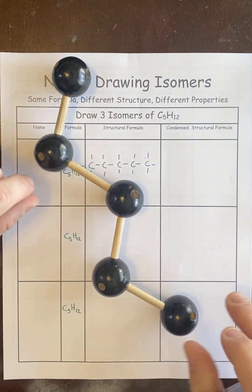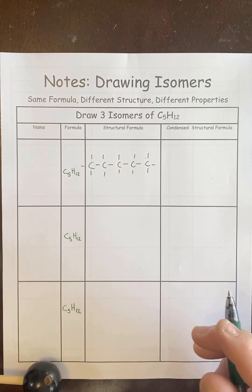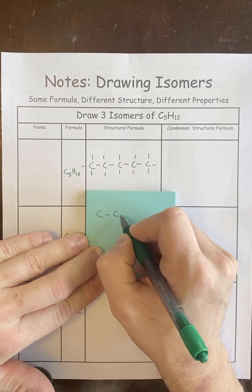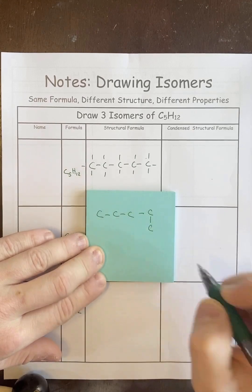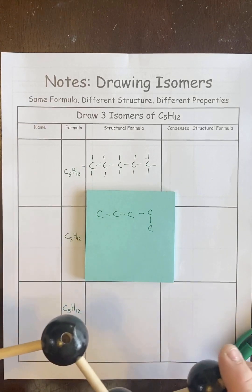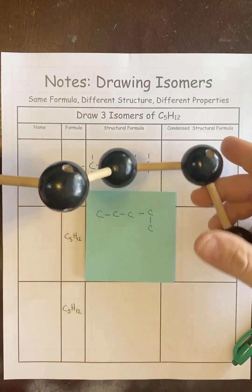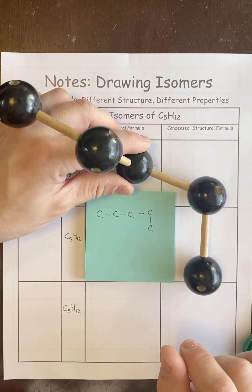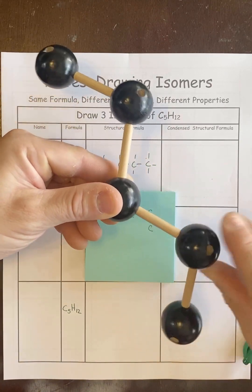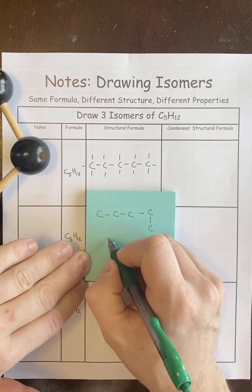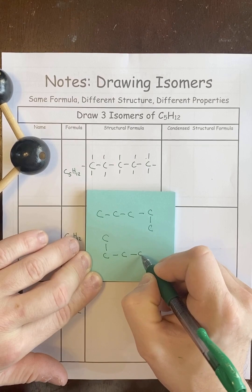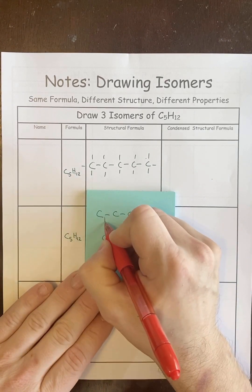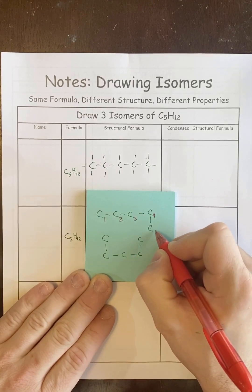A common mistake I see is for the second isomer, students will try stuff like this — four in a row and then put the fifth carbon pointing down. But that doesn't make it an isomer, because all you have to do is just twist it back and it's still a straight chain. It's not about their shape; it's about how they're connected.